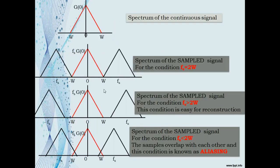The figure shows the spectrum for various values of Fs. This is the spectrum of the continuous signal. When Fs = 2W, the sampled signal spectrum is as shown. When Fs > 2W, the spectrum of the sampled signal has separation and is easy for reconstruction. When Fs < 2W, the samples overlap with each other — this condition is known as aliasing.